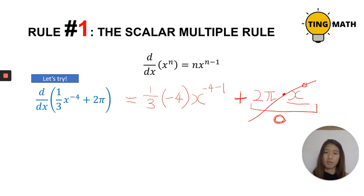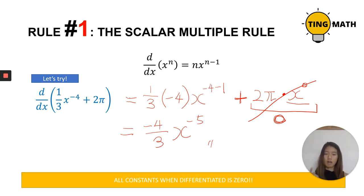So this is something important. Any constant when we try to differentiate it, constant meaning like two or three or four, will equal zero. So now let's simplify this. One third times negative four gives negative four over three. And x to negative four minus one gives x to the power of negative five. Just remember, all constants when differentiated is zero.